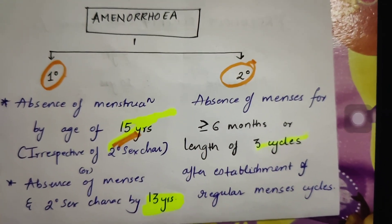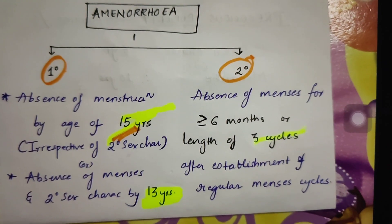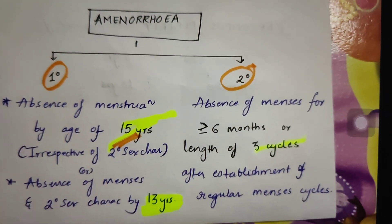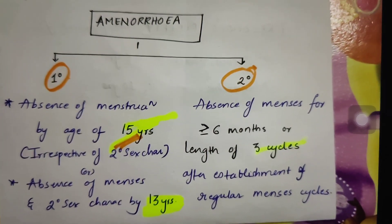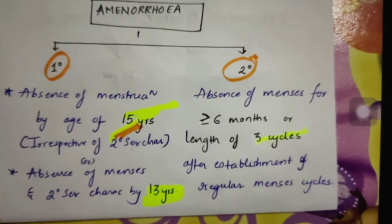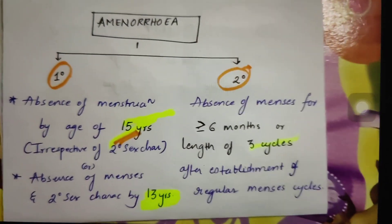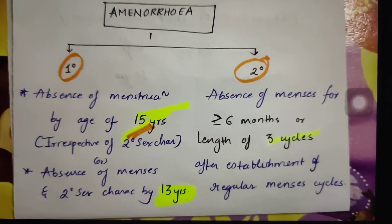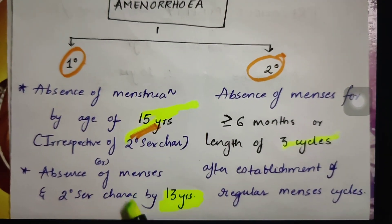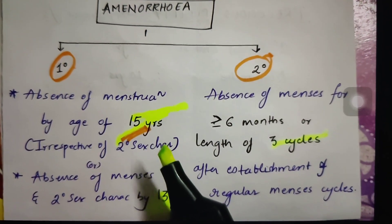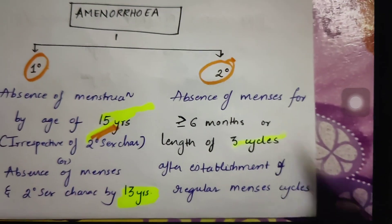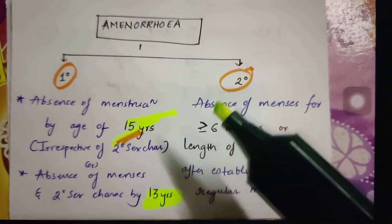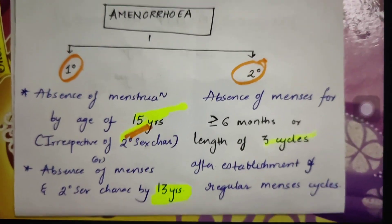Amenorrhea is defined as absence of menses. Amenorrhea is of two types: primary and secondary. Primary amenorrhea is a condition in which the patient has never had menses in her entire lifetime, whereas secondary is when the patient had regular cycles previously but now is complaining of absence of cycles after a gap. Primary is absence of menstruation by age 15 years irrespective of secondary sexual characteristics, or absence of menses and secondary sexual characteristics by 13 years. If the definition involves absence of secondary sexual characteristics, the criteria decreases to 13 years. If irrespective of secondary sexual characteristics, it's 15 years. Coming to secondary amenorrhea: absence of menses for greater than or equal to 6 months or the length of 3 cycles after establishment of regular menses cycles. This is regarding the basic concept of amenorrhea, absence of menstruation.